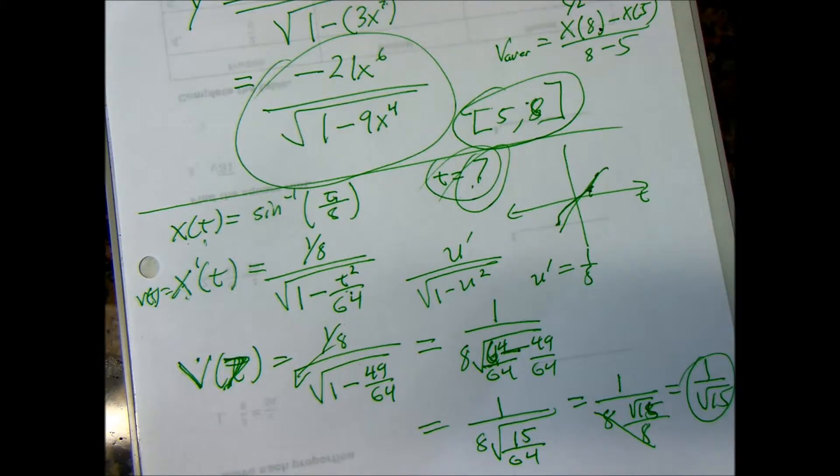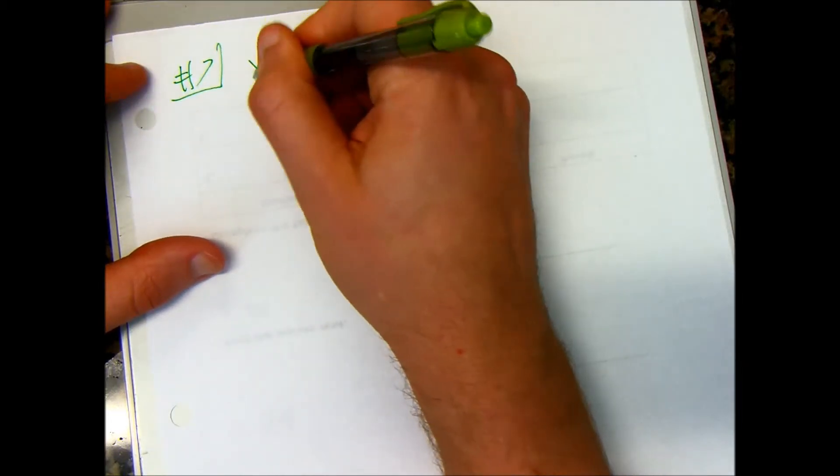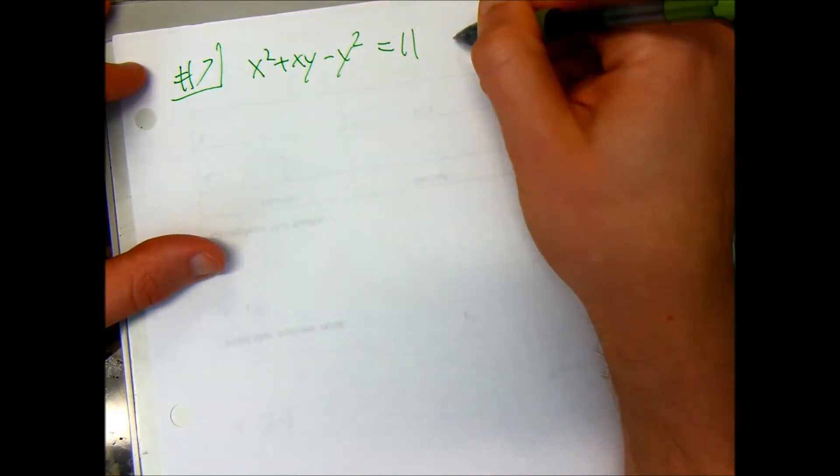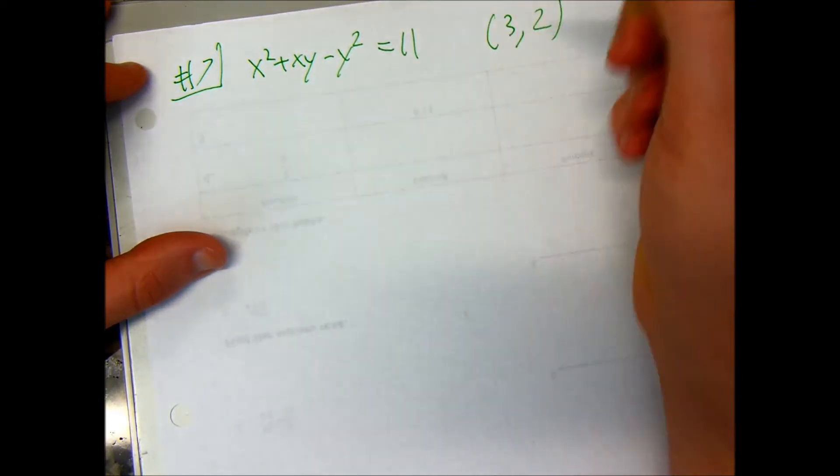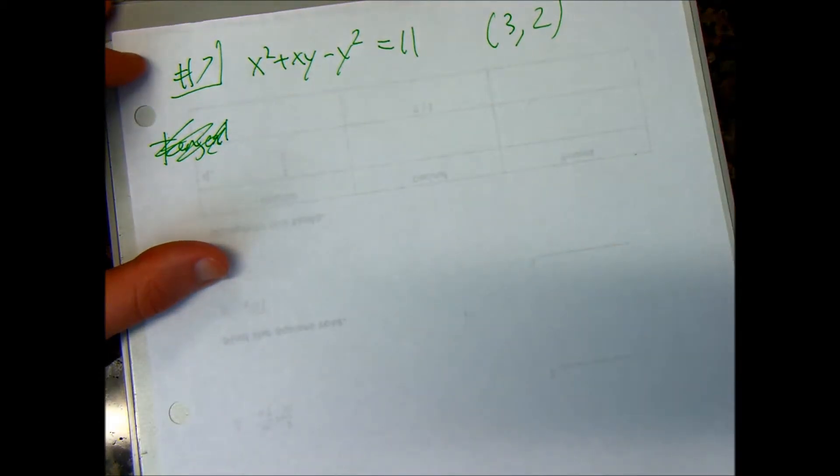All right, last thing. Last couple things. This is going to be number 7. It says, find the given point, find the lines that are tangent to this point on the curve. So this is number 7. We have x squared plus xy minus y squared equals 11, and then they give you the point 3 comma 2. So, let's find the tangent line first. Actually, let's find the derivative first. That's the first thing you've got to do.